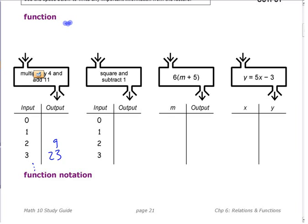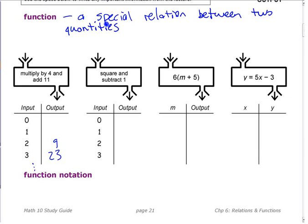A function is a special relation, a special type of relationship between two quantities. It could be a special relation between two things, even if they weren't numbers. Most of the time we're dealing with numbers, so I'm going to put quantities, but it could be two things.